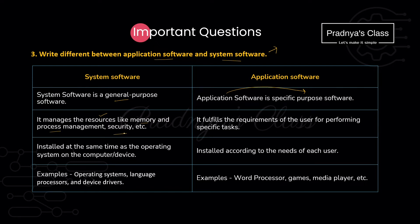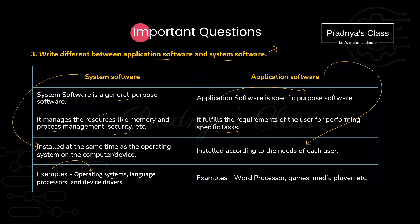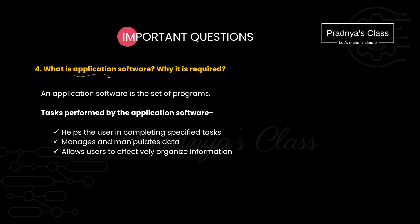System software even takes care of the security of the system, whereas application softwares are designed to perform some specific task. System software will be installed at the time of installation of the operating system, but in case of application software, we install it only if we need it. Examples of system software include the operating system, language processors, and device drivers. Examples of application software include word processors, games, and media players.